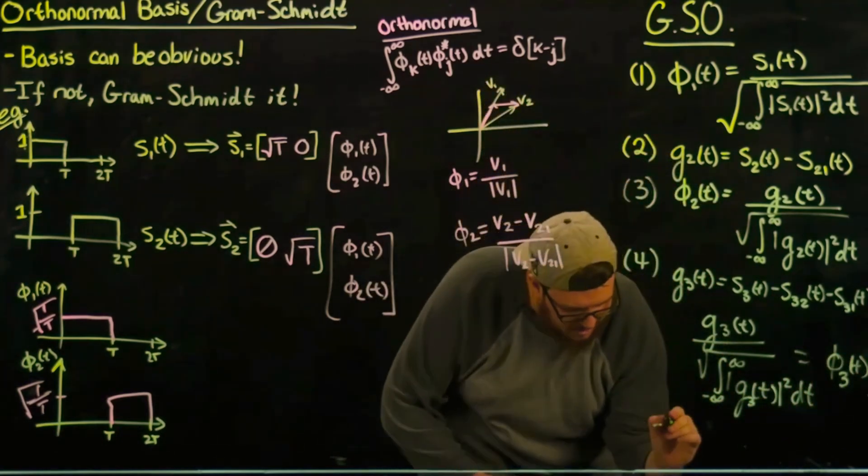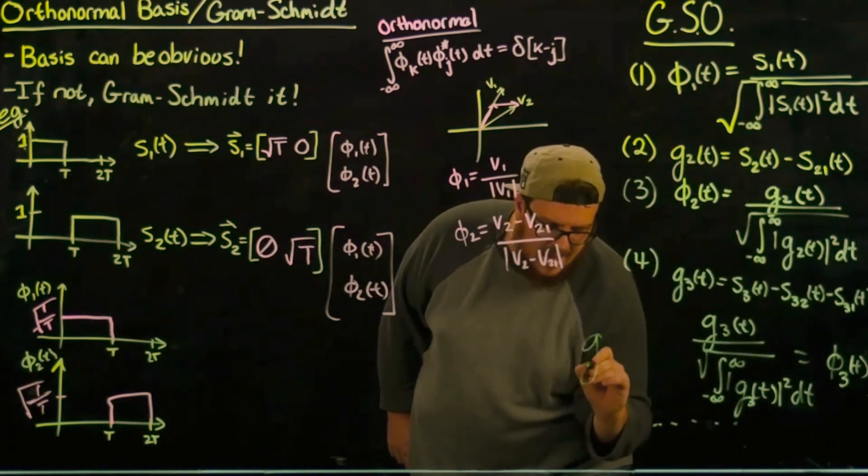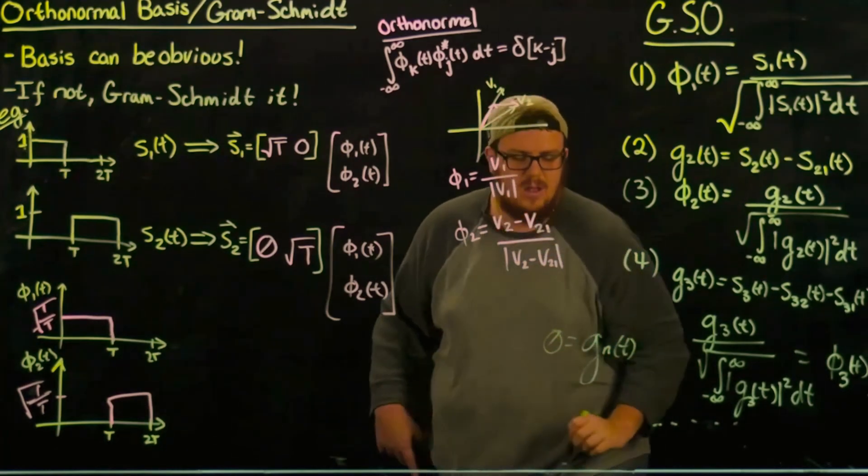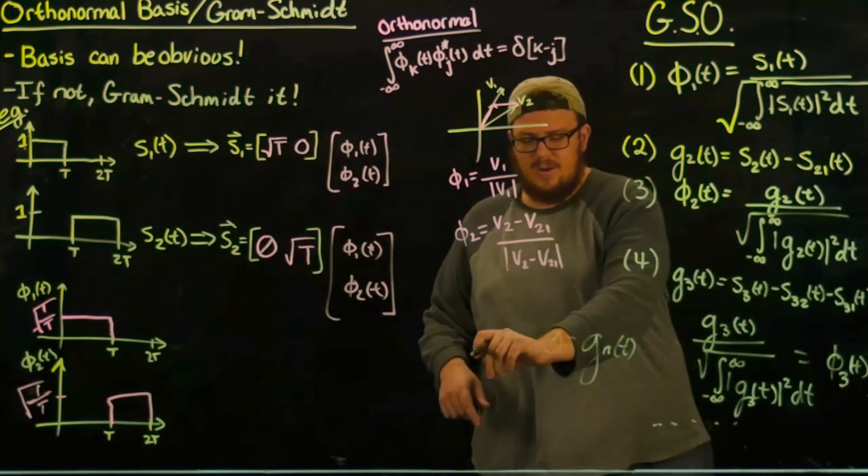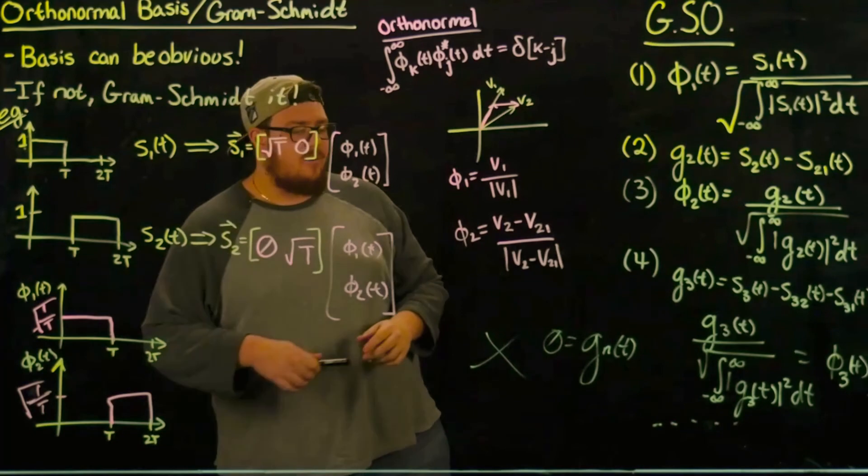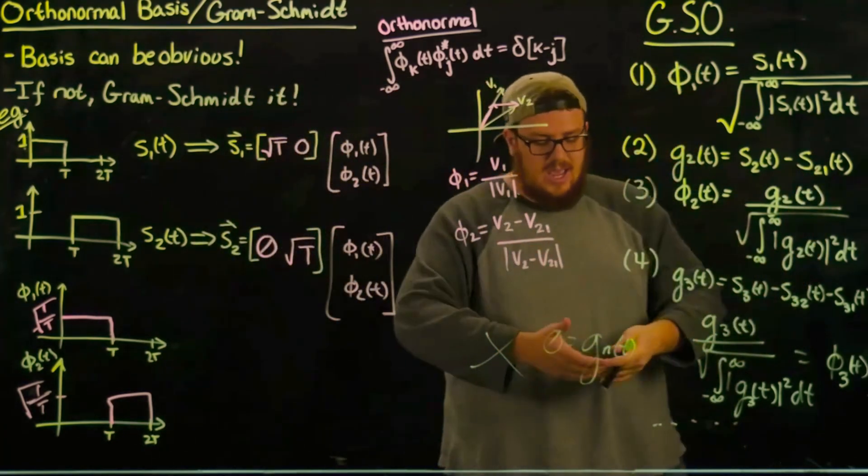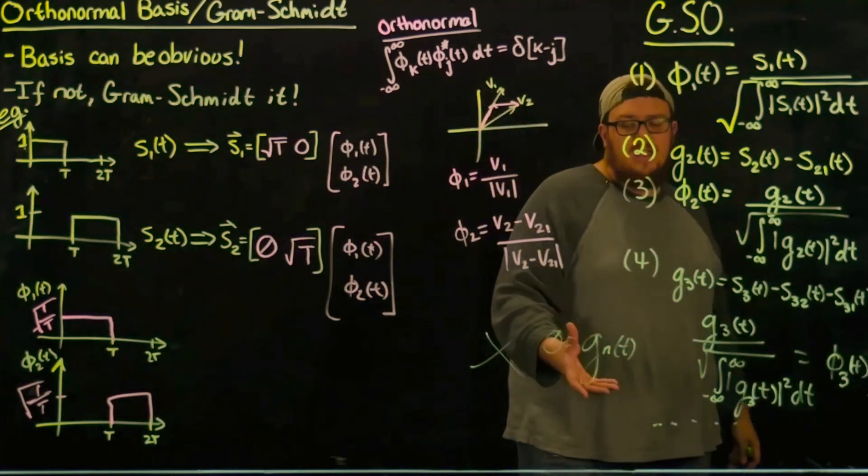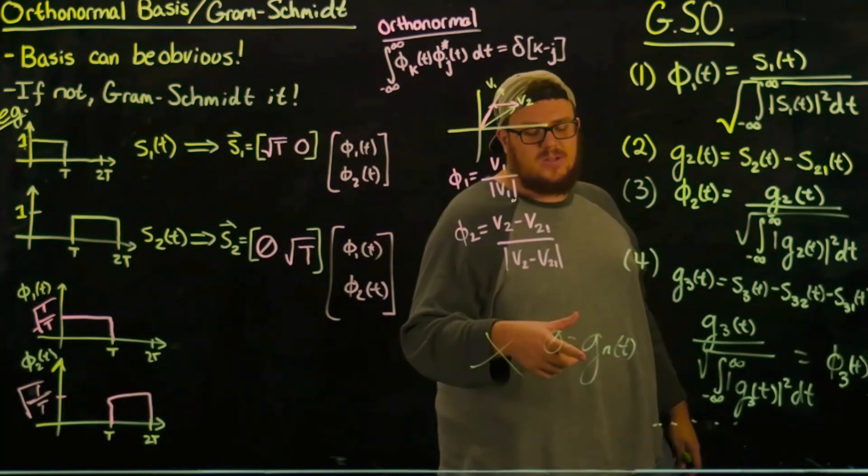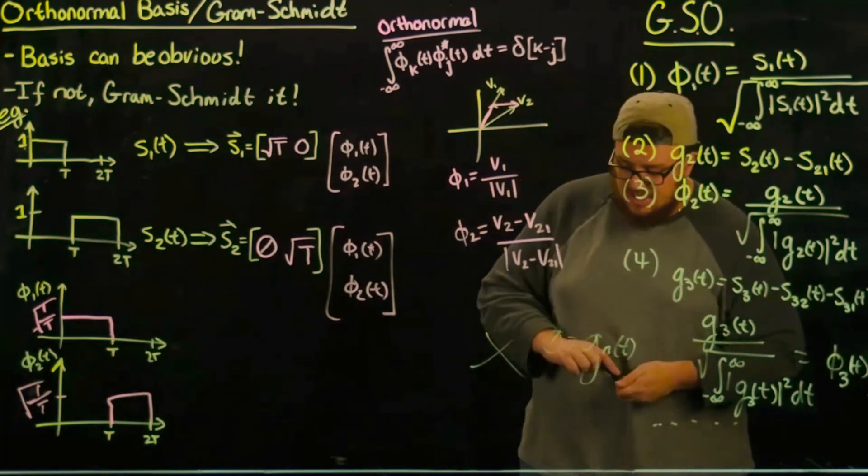And so on and so forth. You just keep going until when you calculate g_n(t) and that equals zero, then you terminate the process, then you're done. Specifically when you've exhausted all of your signals, so you take all of your signals and you're done, or when you start getting zeros when you start calculating g_n's, that's when you finish the Gram-Schmidt orthogonalization process.